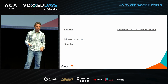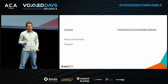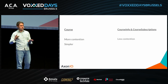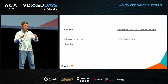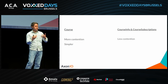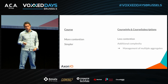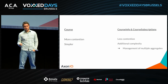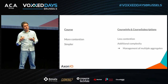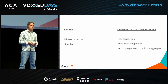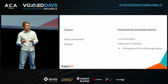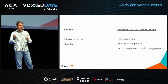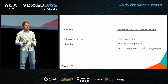But the problem with splitting into two aggregates is additional complexity. When creating a new course, we need to create both a course-info and course-subscriptions aggregate. What happens if one of those two fails? And when deleting a course, we need to coordinate between both aggregates. The trade-off is real.